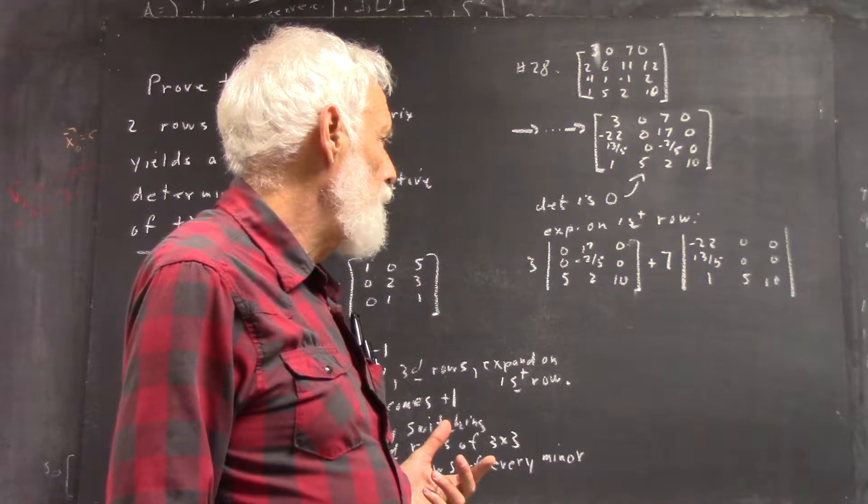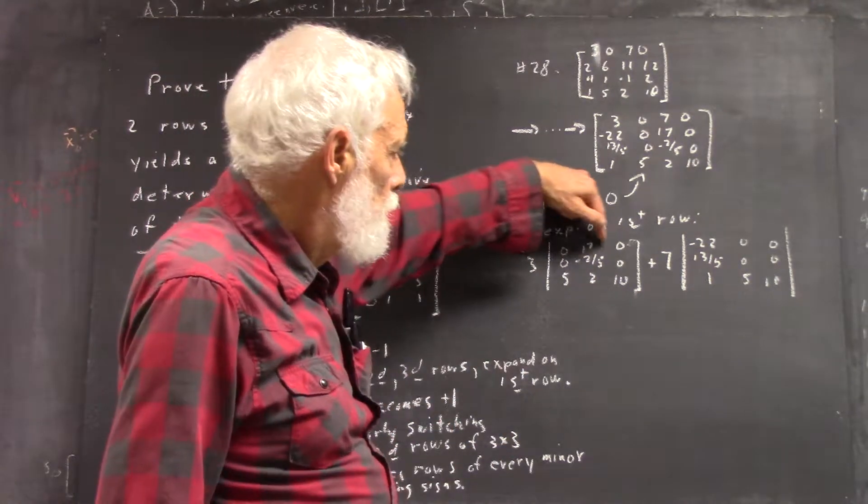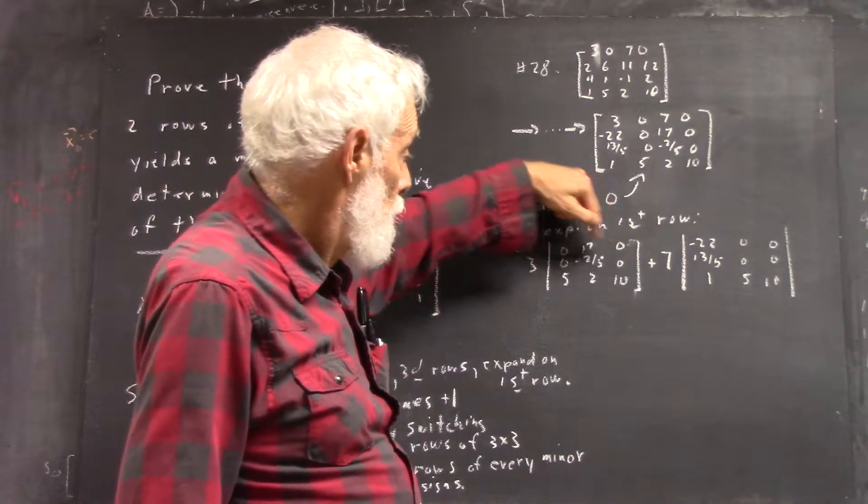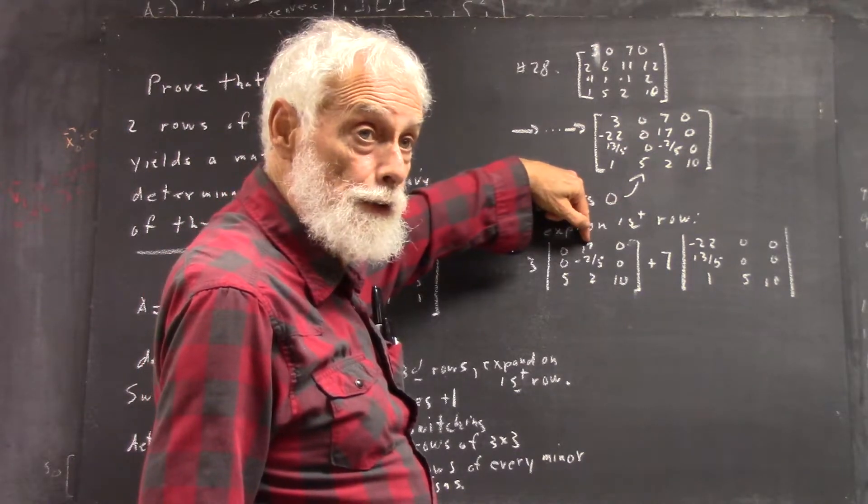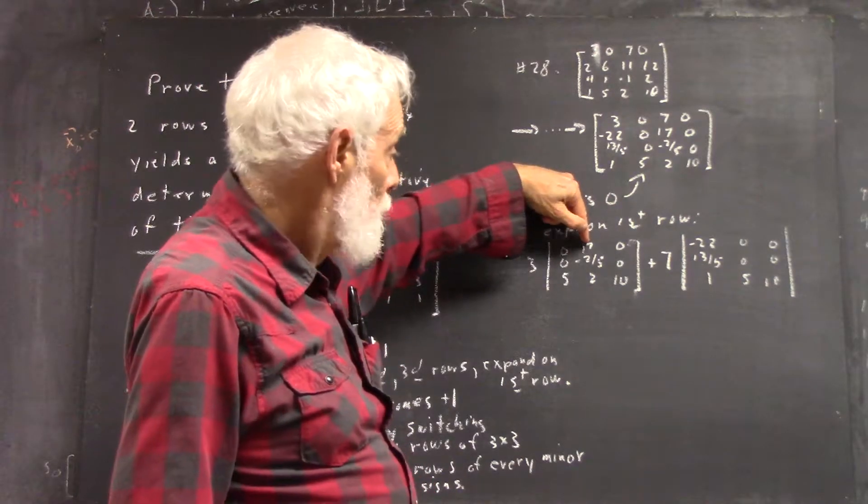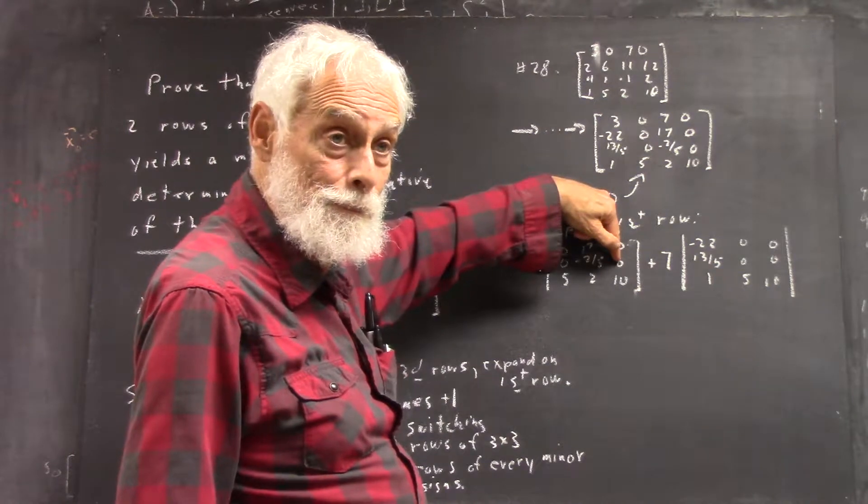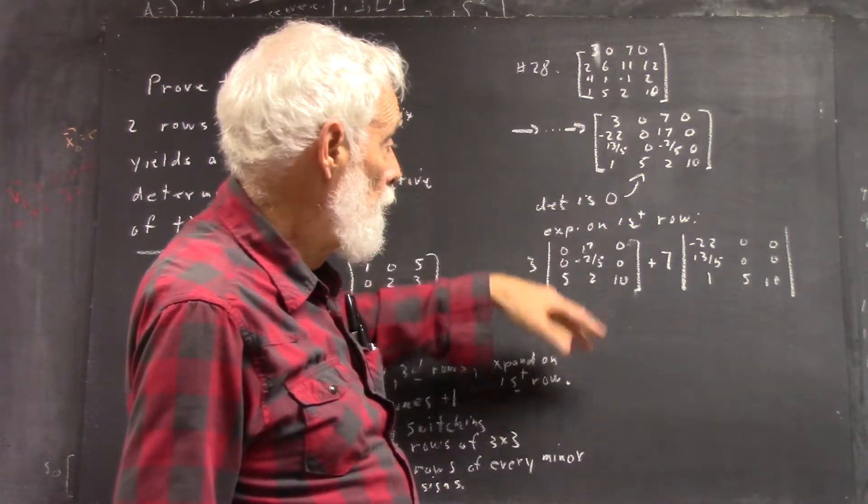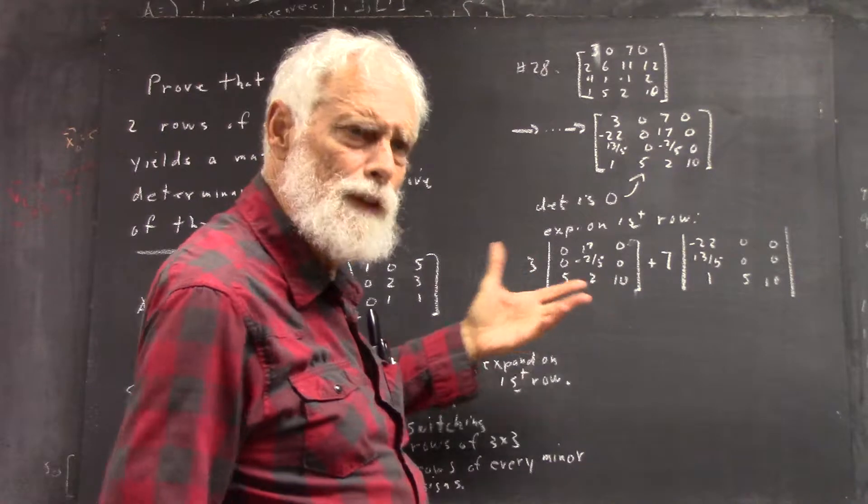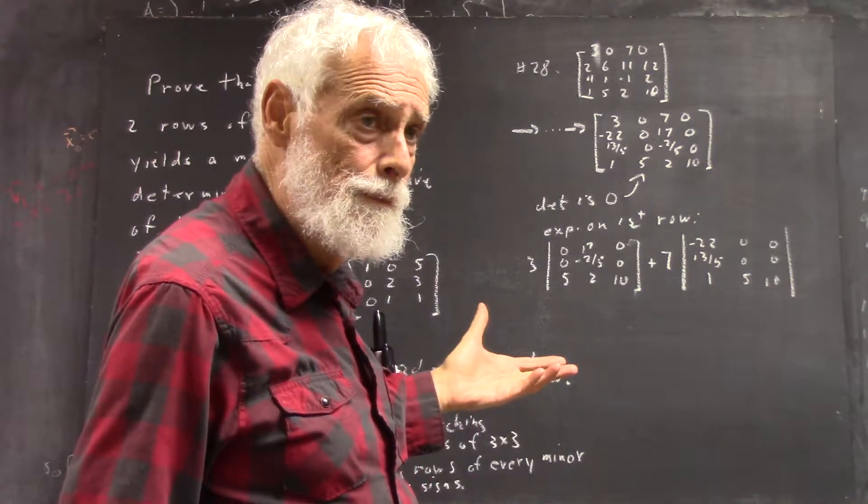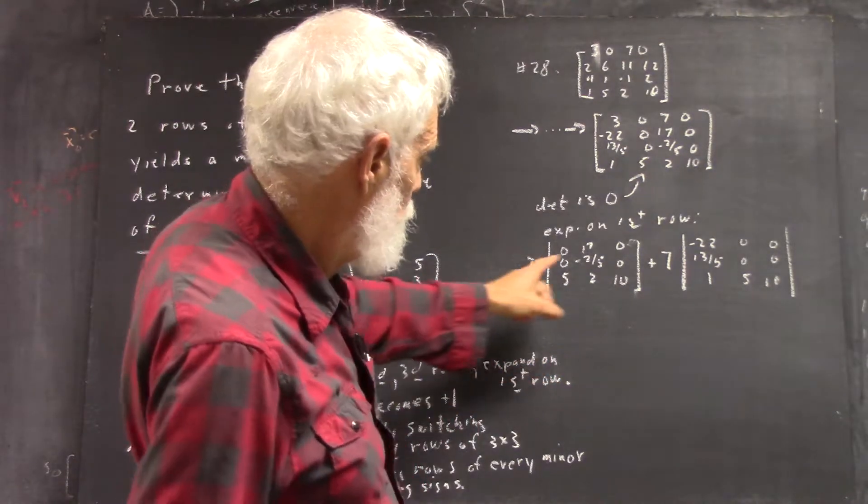But if I expand on this row here, the only one that's not zero is this one, right? But then I've got a zero here and here. So when I expand on either of the minors, I'm going to get zero. Does that make sense? I'll write it out in a minute, but hopefully you see it.